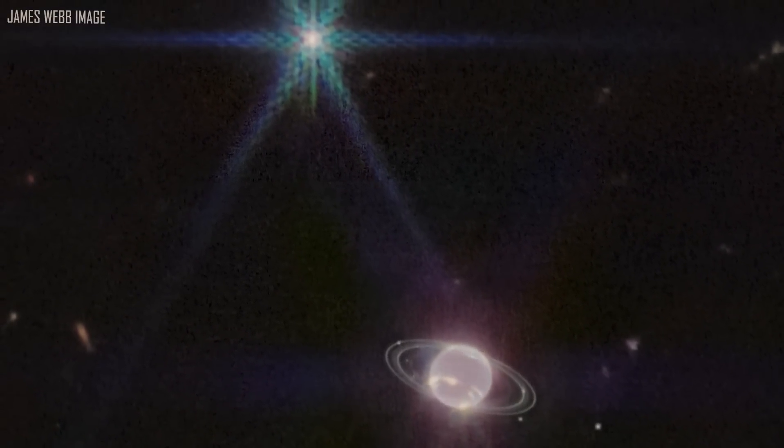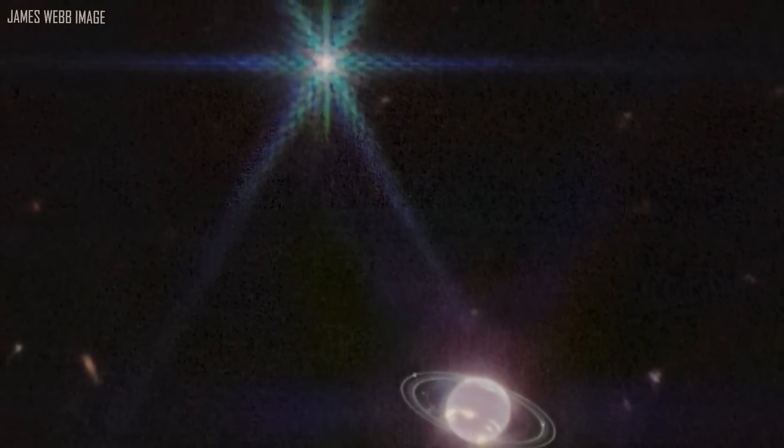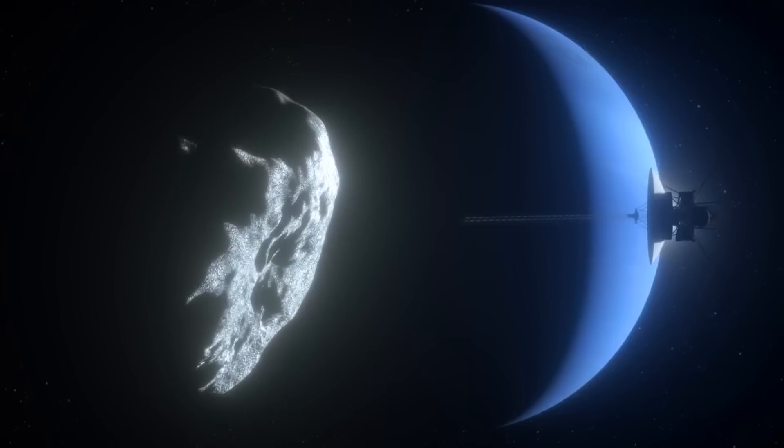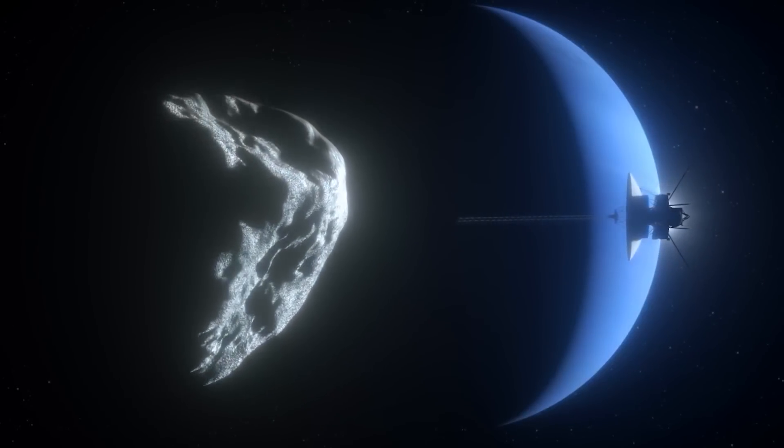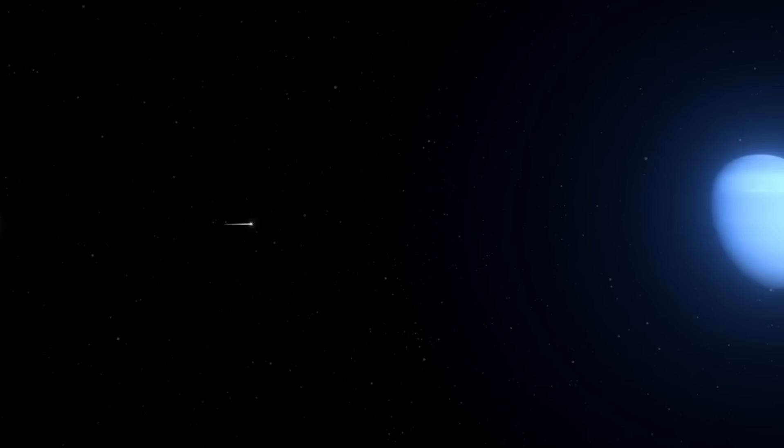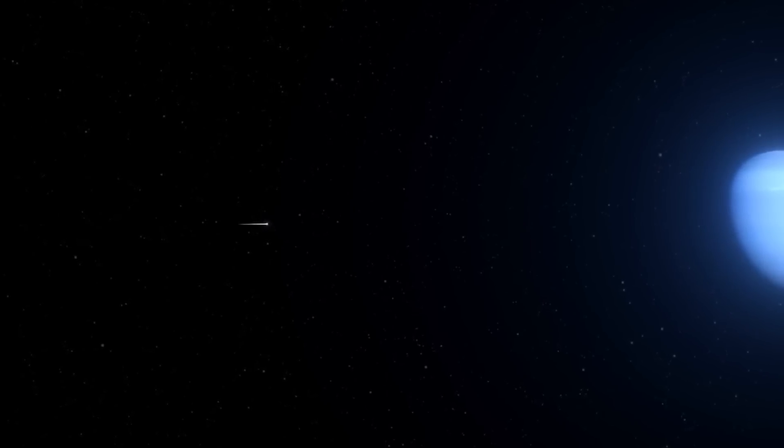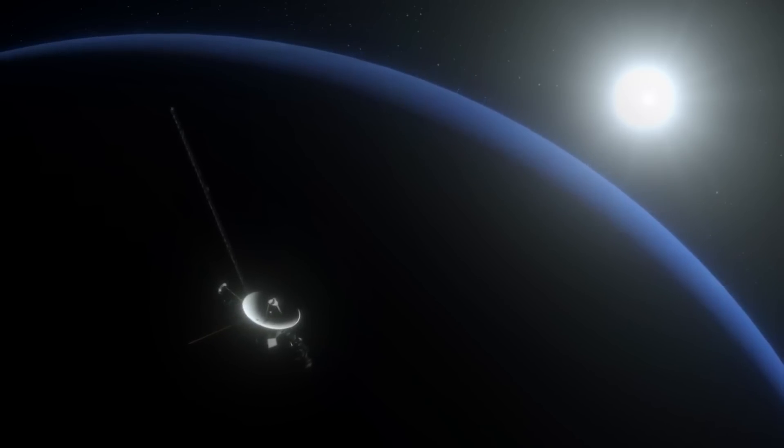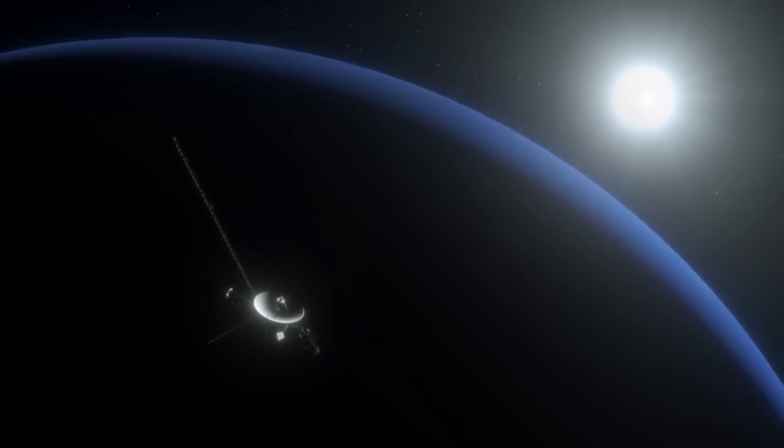However, it should be noted that the ring system of Neptune also contains strange dust clusters known as arcs. The four most noticeable arcs are found in the outermost ring, Adams, and are referred to as Liberté, Egalité, Fraternité, and Courage. The arcs are odd because according to the principles of motion, they should have dispersed equally instead of remaining grouped together. Galatea's gravitational influences, according to scientists, are likely what stabilize these arcs.